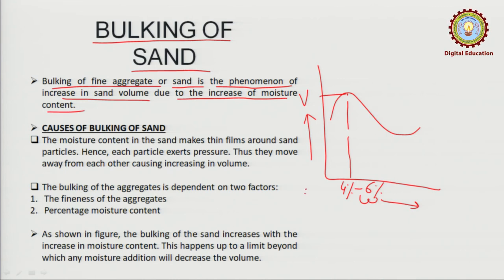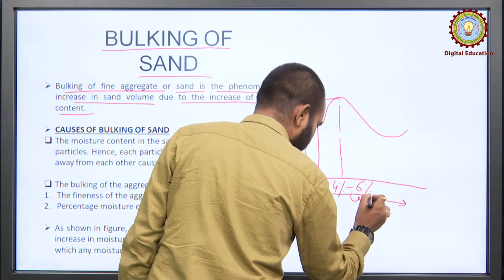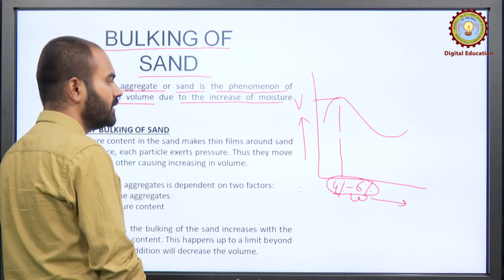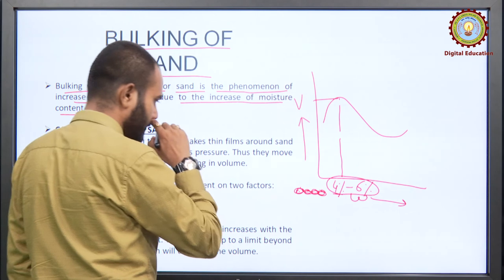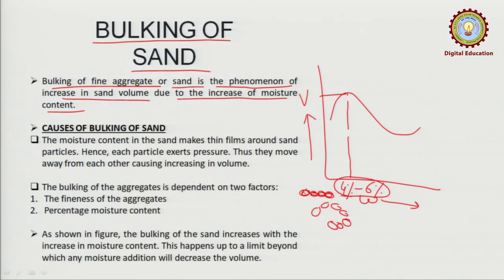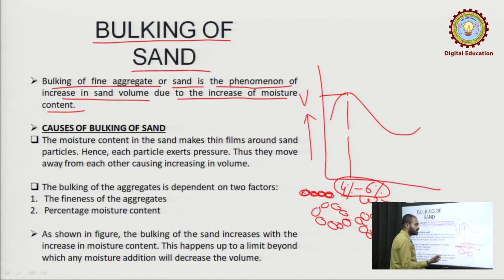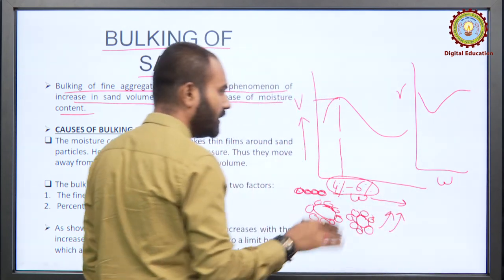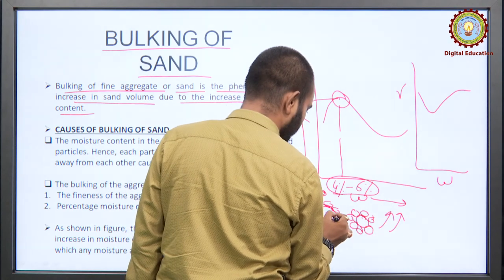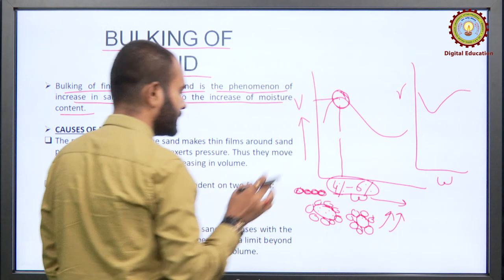Suppose we have dry sand initially. If we increase the water content slowly — percent by percent — when the water content reaches the range of 4 to 6 percent, the sand particles get coated with water. Due to this coating, they form a flocculated structure throughout. Due to flocculation, huge voids are formed and the volume increases, but the density does not increase — density is actually minimum at this point.